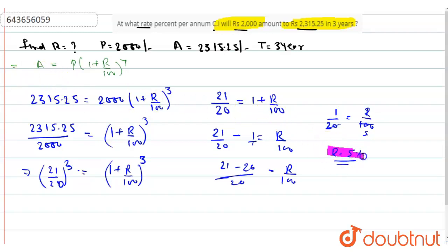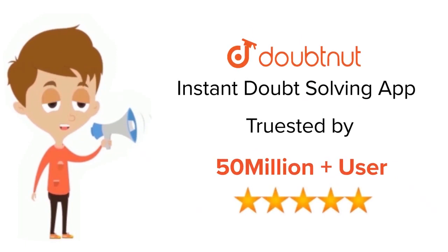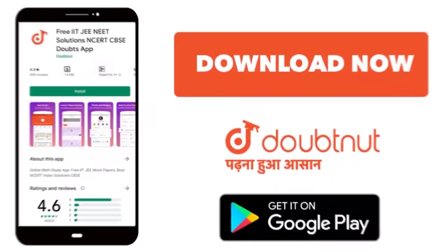When the principal is 2000 rupees, the amount is 2315.25 rupees, and the time is 3 years. Thank you so much. For class 6 to 12, up to IIT-JEE and NEET level, trusted by more than 5 crore students, download Doubtnet app today.